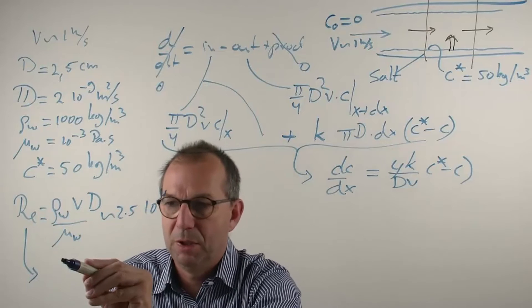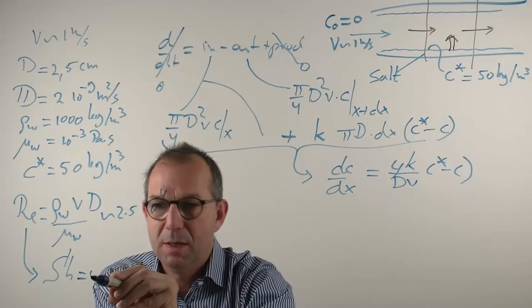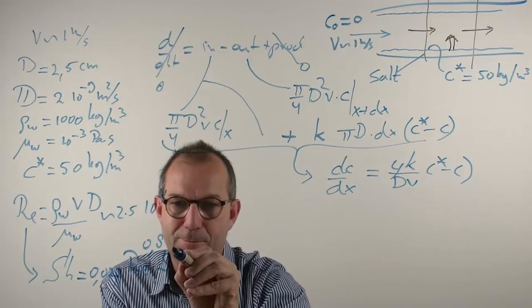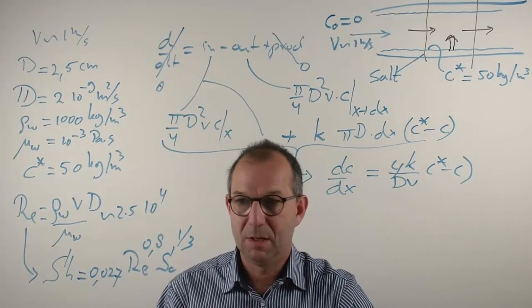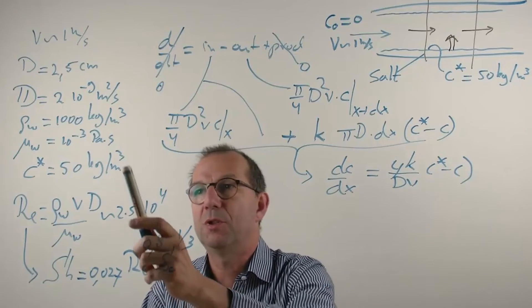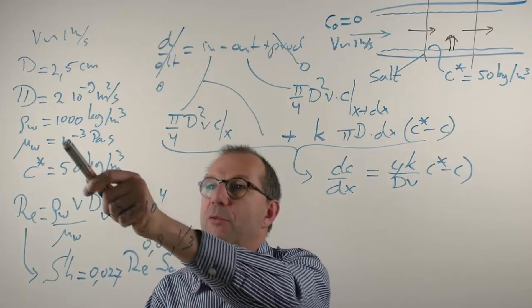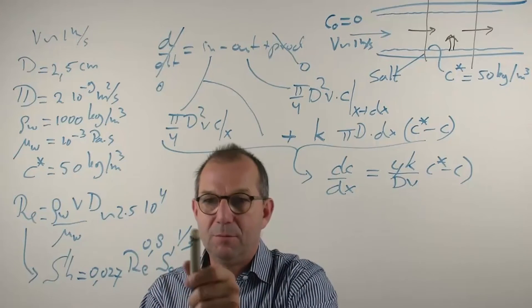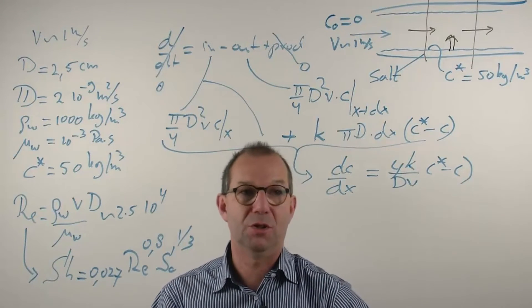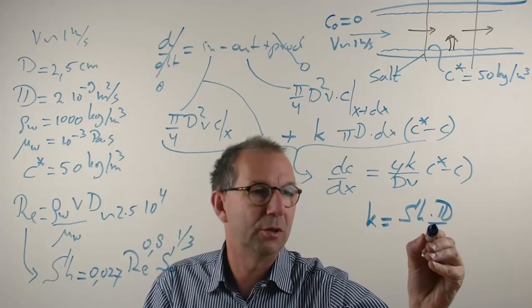Then I can look up my Sherwood number. The Sherwood relation for turbulent pipe flow from mass transfer wall into the bulk. You can find that in textbooks and on the internet is this formula. And I'll explain what it means. It's depending on Reynolds, and it's depending on what's called the Schmidt number. And the Schmidt number is the ratio between the viscosity over the density, and that divided by the diffusion coefficient. And that's on the order if you fill in these numbers 500. Reynolds I already had, so I can equate this and I can find my Sherwood number. Which is in this case a constant. That's good news because then k is a constant.